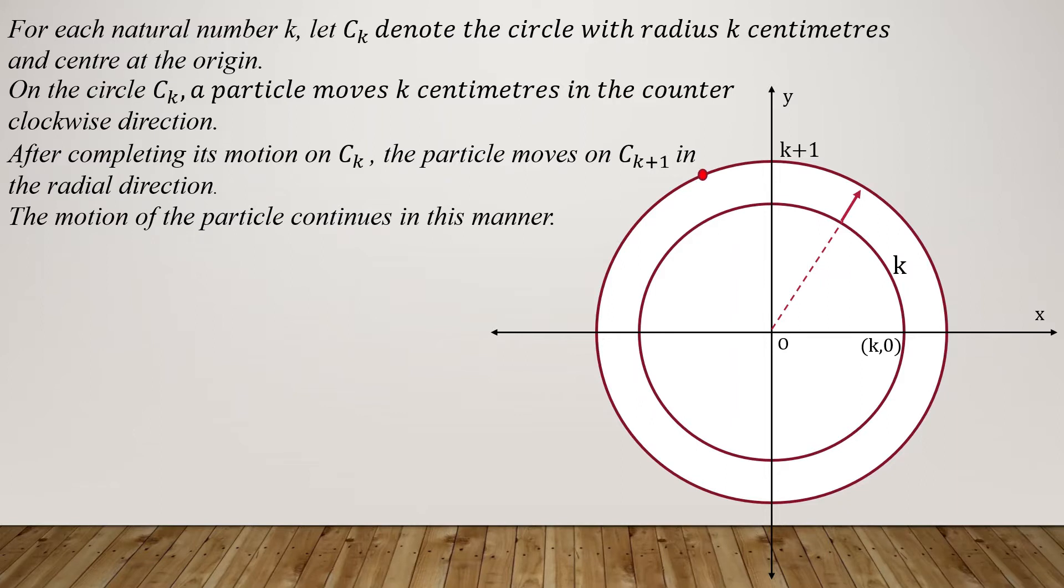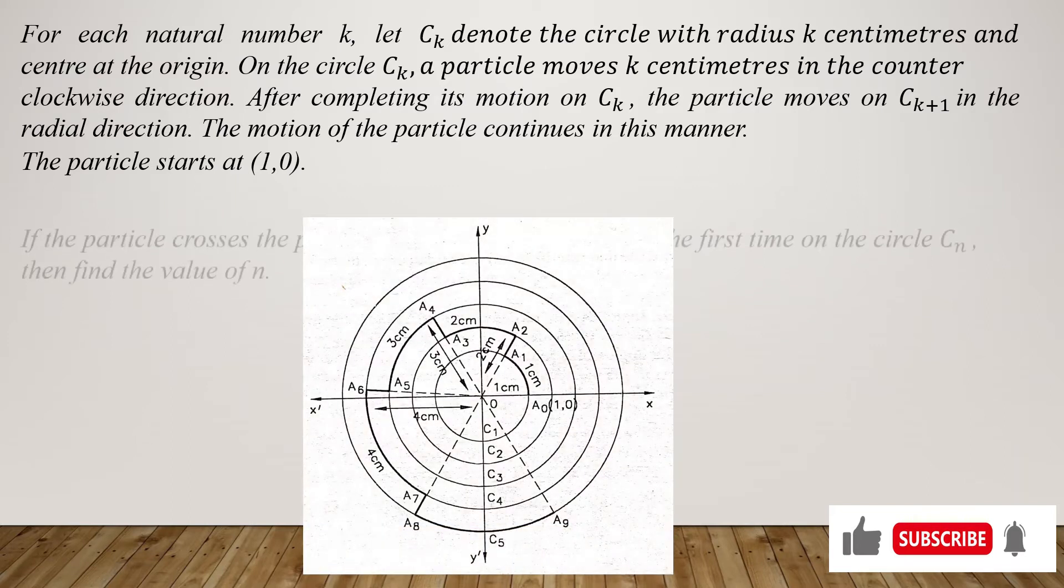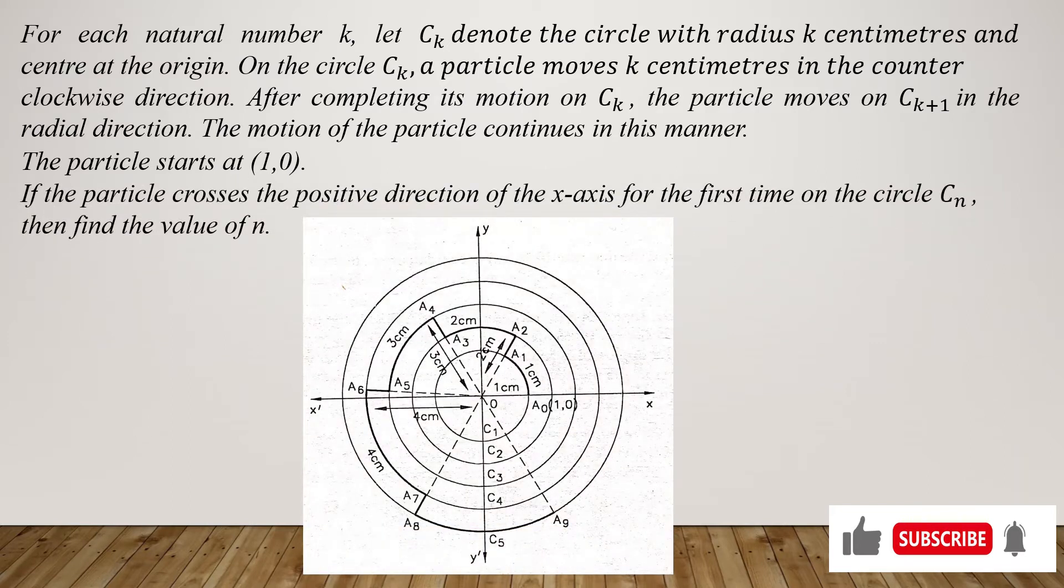The question is: if the particle starts at (1,0) on the x-axis, then find the value of n if the particle crosses the positive direction of the x-axis for the first time on circle Cn. Here you can see the basic knowledge of the diagram.